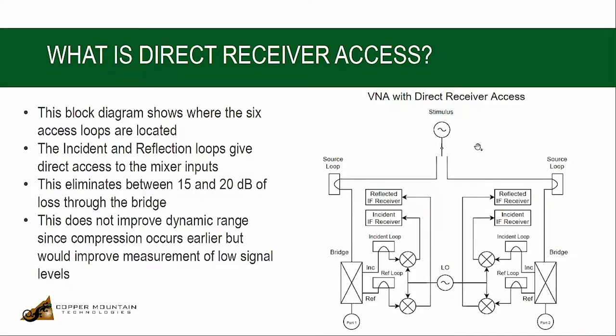So we have three loops on each side that'll allow us to put the bridge outside the VNA. We can use another device to separate incident and reflected signals, and we'll see why that's useful. It should be noted that we can put signals directly into the mixer sections here, eliminating the 15 to 20 dB coupling loss of the bridge. This does not actually improve dynamic range of the VNA because the compression point moves downward as well.